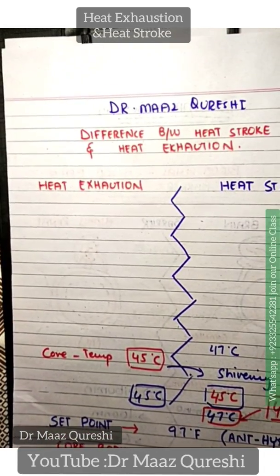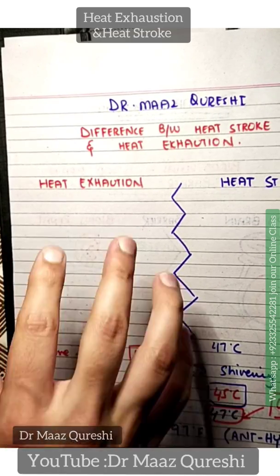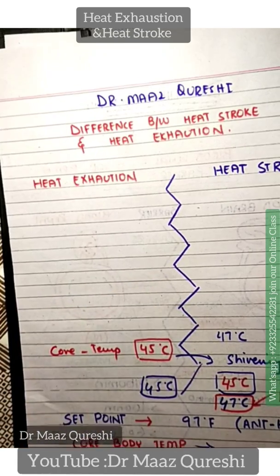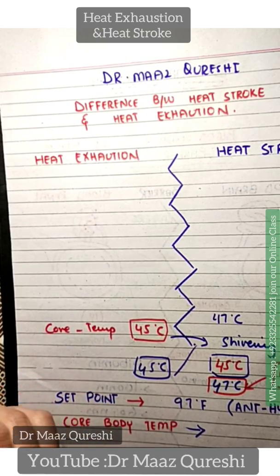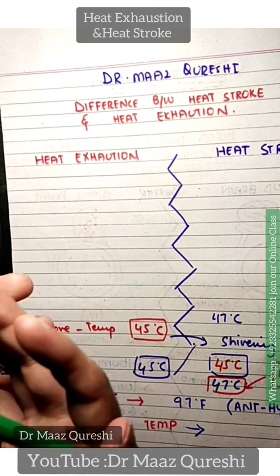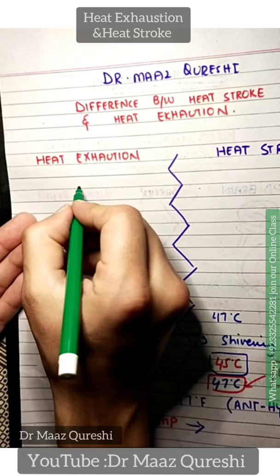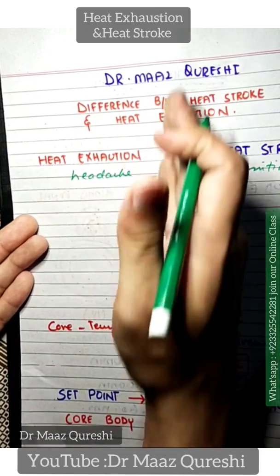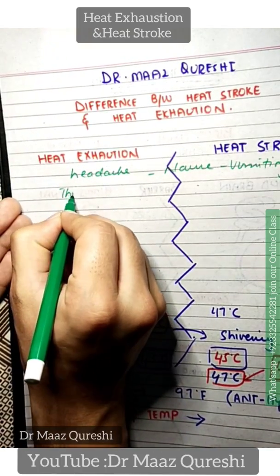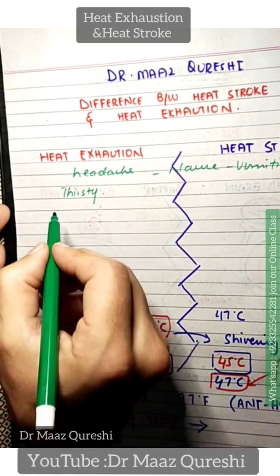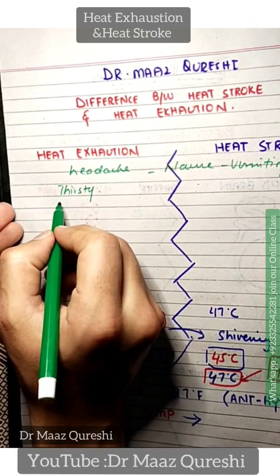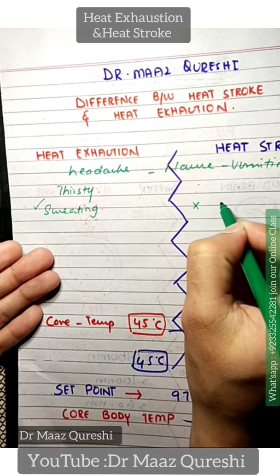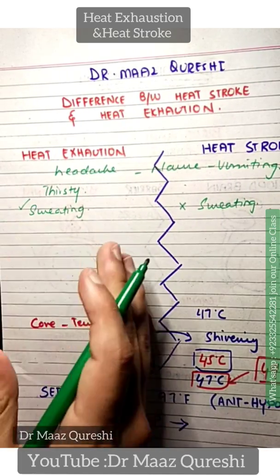Now let's get into heat exhaustion and heat stroke. Heat exhaustion is not an emergency, whereas heat stroke is a very serious condition — call 911 or hospital staff immediately. In heat exhaustion, you will have nausea, headaches, thirst, and vomiting. A key sign is sweating — if a patient is sweating, that points to heat exhaustion. In heat stroke, you will not be sweating. In heat exhaustion, you will also have a rapid, weak pulse.